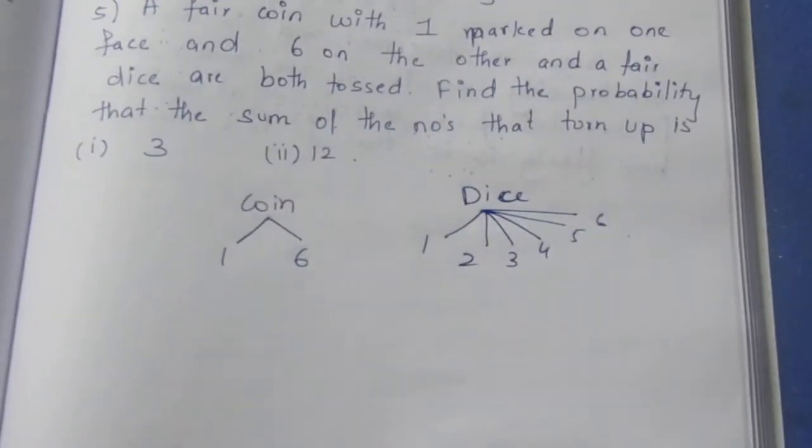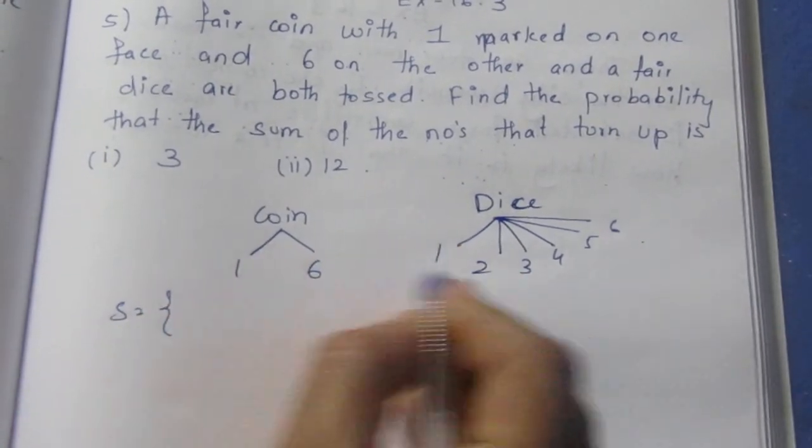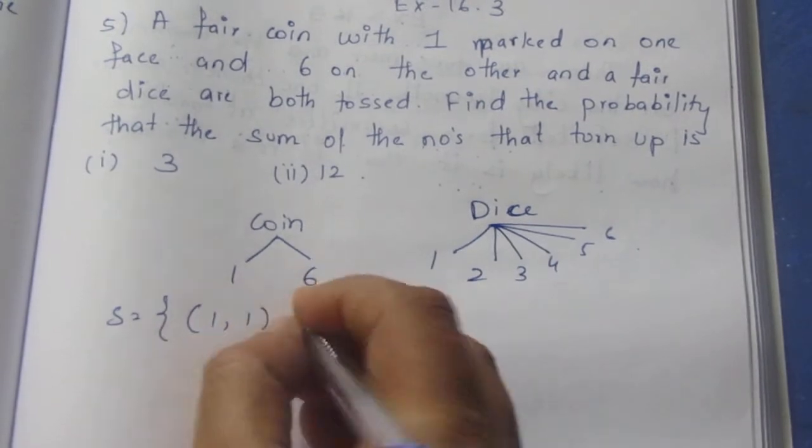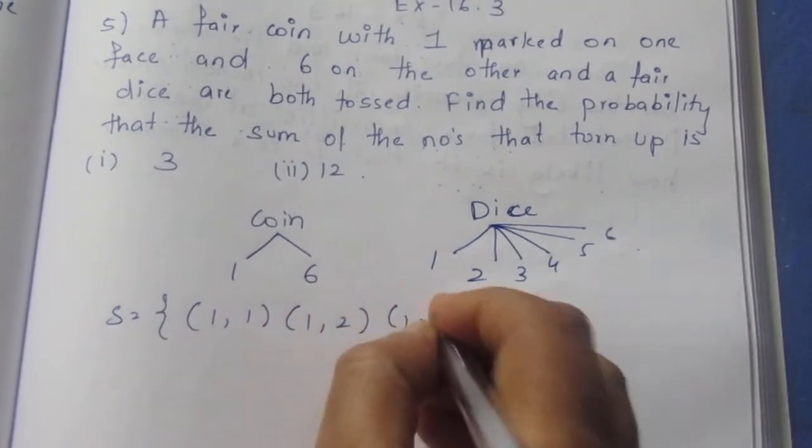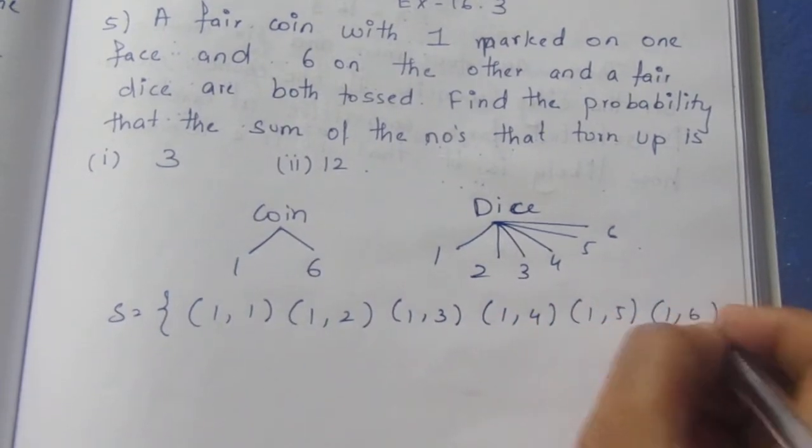Now the sample space is (1,1), (1,2), (1,3), (1,4), (1,5), (1,6), (6,1), (6,2), (6,3), (6,4), (6,5), (6,6). That is the sample space.